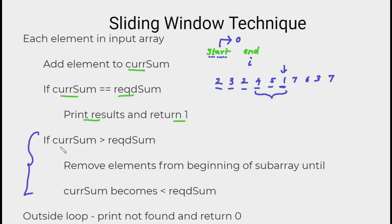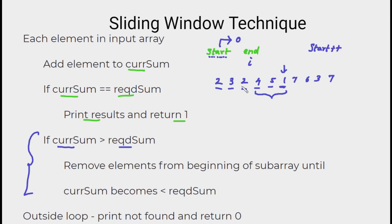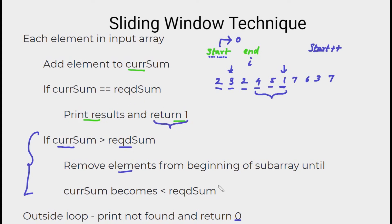We keep track of start at each step. If the currentSum is greater than the required sum, we remove elements from the beginning of the subarray. To do this, we subtract the beginning element from the currentSum — the beginning element is given by the start index — and increment start, since we have removed that element. We continue this as long as the currentSum is greater than the required sum, not just for one element. Outside the loop, after scanning all elements, we print that the result is not found and return 0. If any match was found, we would have already returned 1.